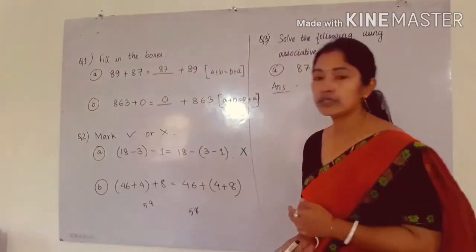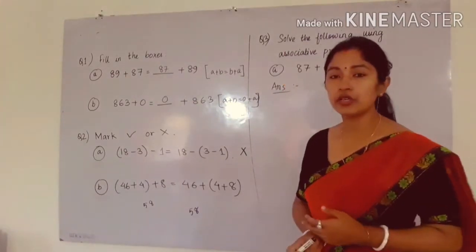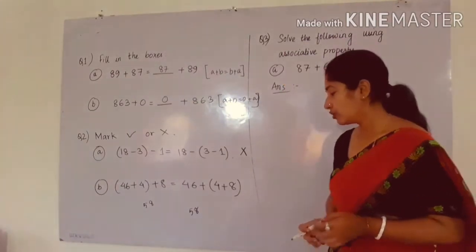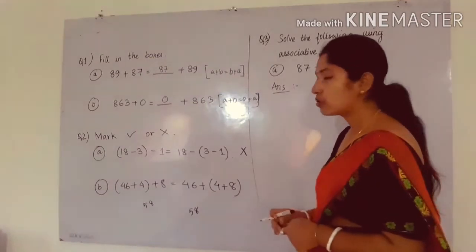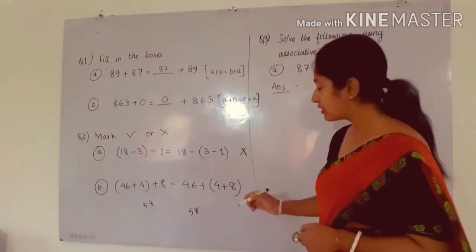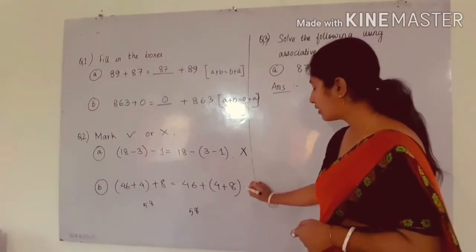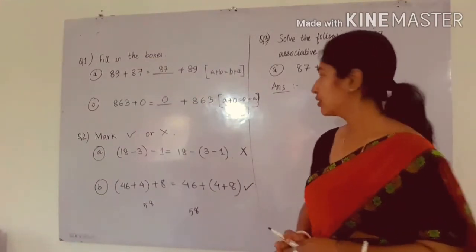So we know that the associative property in case of addition in whole numbers holds true. This is the associative property. It holds true, that means the statement is correct.